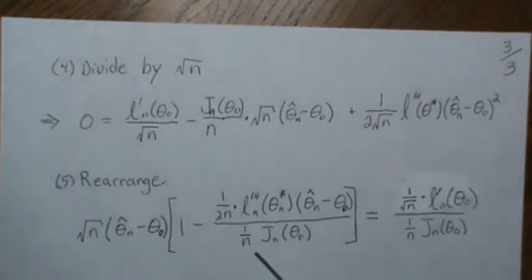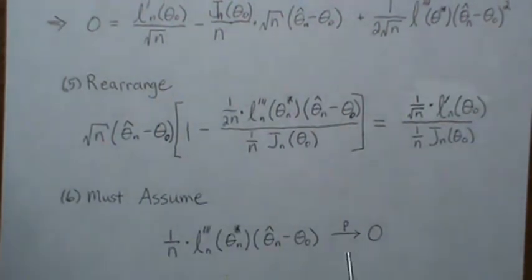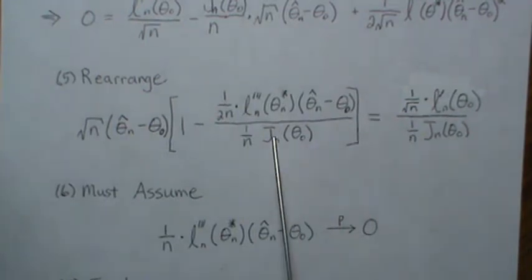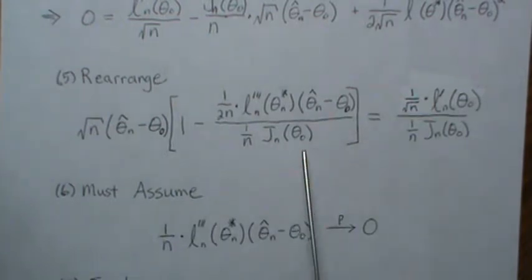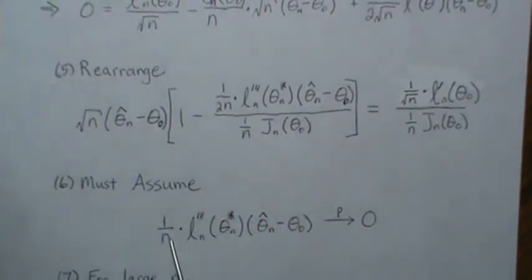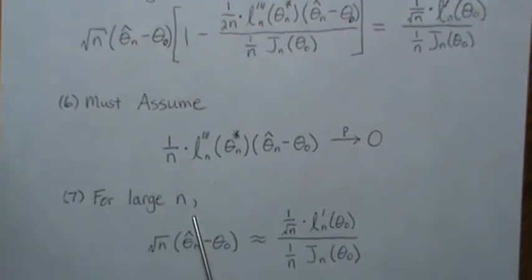We assume that the remainder piece — involving the third derivative — converges in probability to zero. This is reasonable because the third derivative acts like a sum divided by n, so by the law of large numbers it converges to a constant, and if our MLE is consistent (converging to the true parameter), then θ* → θ₀ and the remainder goes to zero. So for large n this term is approximately zero.